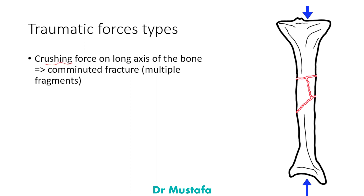The crushing force is similar to the compressing force but is much higher in magnitude. When we apply a crushing force to the tibial bone, we get a comminuted type of fracture — meaning multiple fragments. So while a compressing force gives an oblique fracture, a crushing force gives a comminuted fracture with multiple bone fragments.